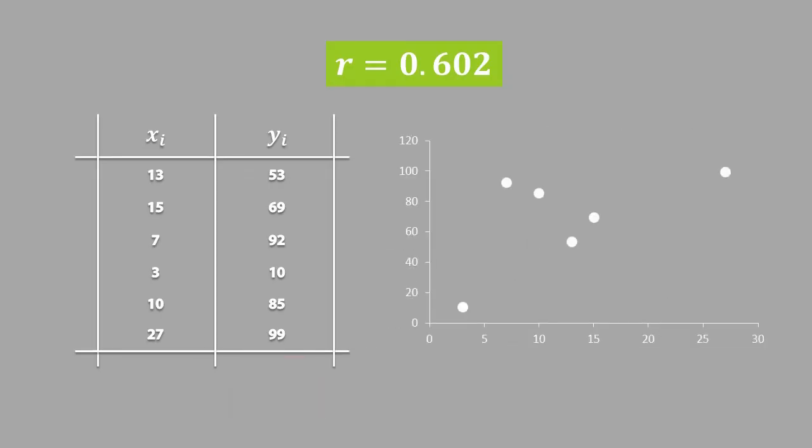So if we plotted our data, it would look like this. We determine that r is equal to positive 0.6, and this makes sense because each data value seems to follow an upward direction.